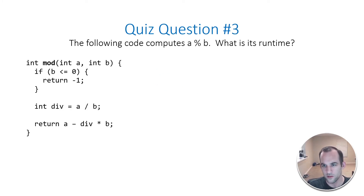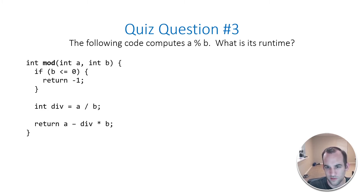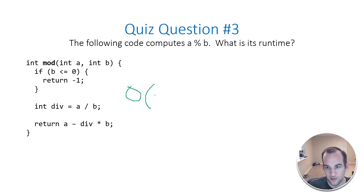Okay, question number three. The following code computes A mod B — what is its runtime? So what do we have here? We have two inputs. We don't care about the if statements, the assignment variable, and then we're just returning once. All that's happening is we're going through each of these lines of code once. Down here we're returning A minus the div variable, which is A divided by B times B. So this is just O(1), because no matter what the inputs A and B are, no matter what the sizes are, we're only going through this once.